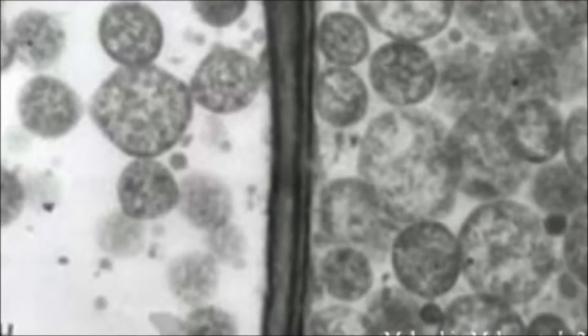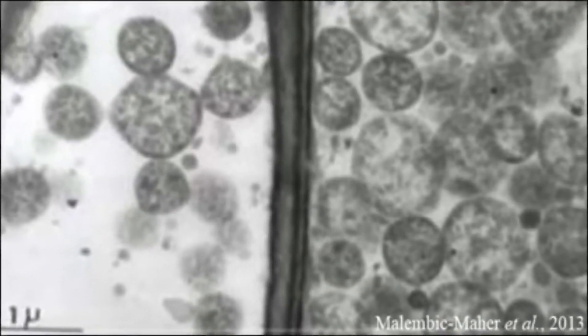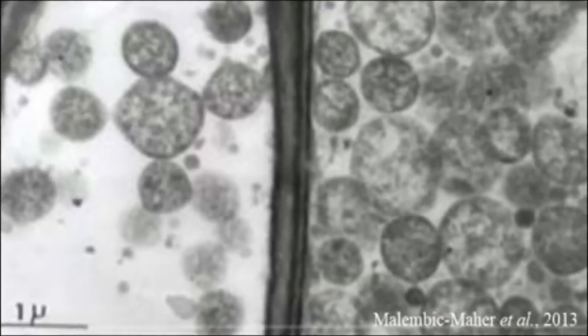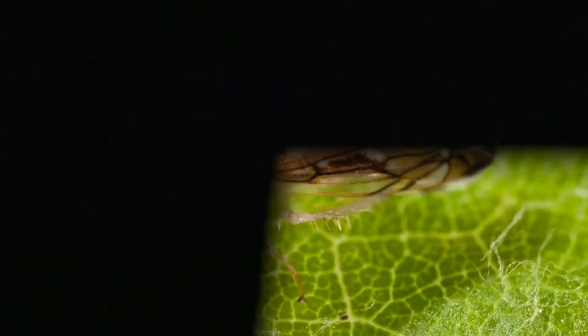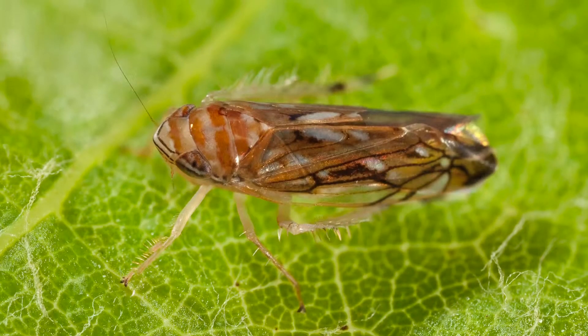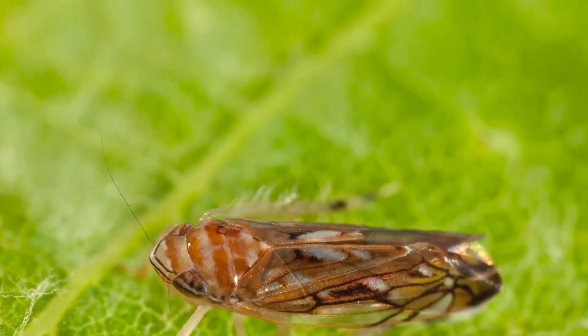Flavescence dorée phytoplasm is a cell wall-less bacteria that lives inside the phloem of the vine. If Scaphorideus titanus feeds on an infected vine, it gets infected as well. Once infected, after a latency period of 30 days, it will remain contagious until the end of its life.